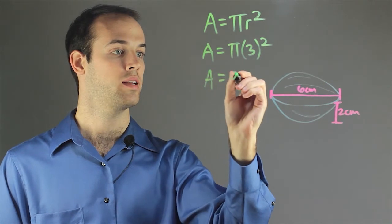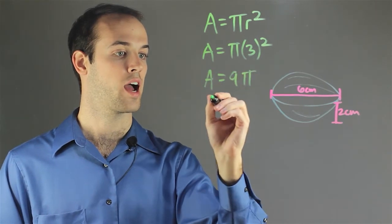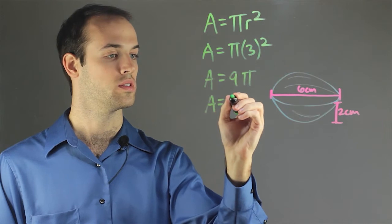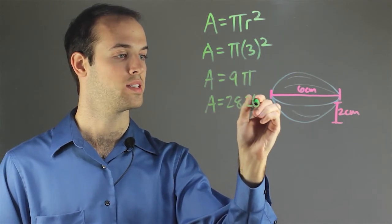3 squared is 9, so our area is 9π, which equals approximately 28.26.